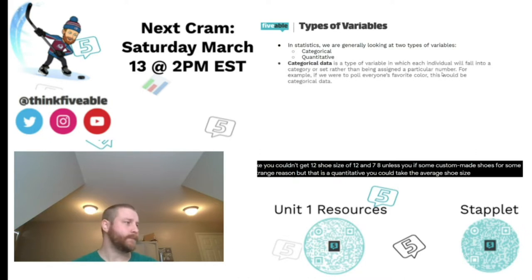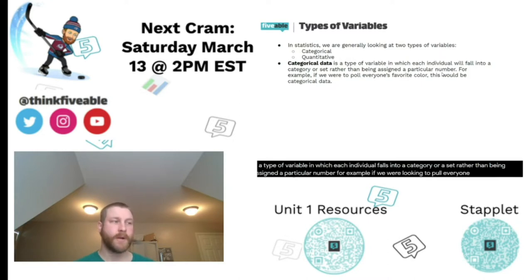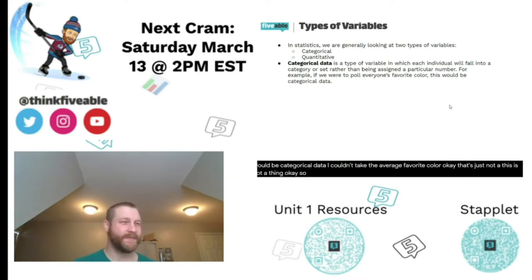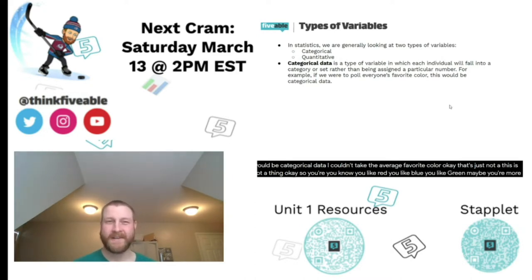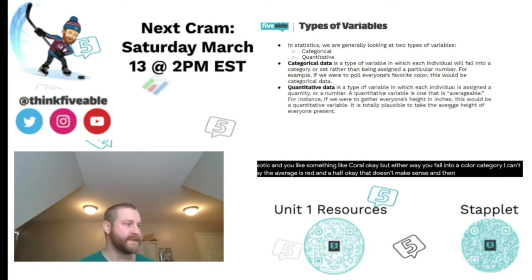Categorical data is a type of variable in which each individual falls into a category or a set, rather than being assigned a particular number. For example, if we were looking at everyone's favorite color, this would be categorical data — I couldn't take the average favorite color. You like red, you like blue, you like green, maybe something like coral. I can't say the average is 'red and a half' — that doesn't make sense.